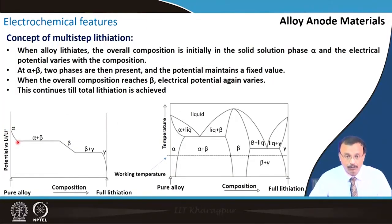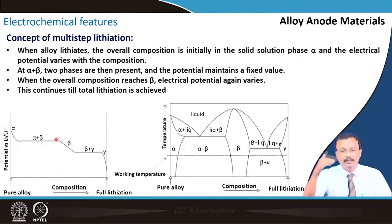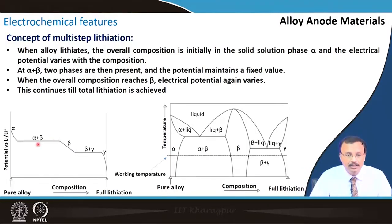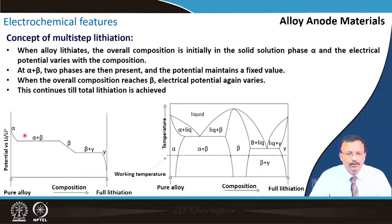When the alloy lithiates, the overall composition is initially in a solid-solution phase (alpha), and the electrical potential will vary with composition — the degree of freedom is equal to 1, so there is a reduction in potential as lithium concentration increases. When a two-phase mixture (alpha plus beta) is present, the potential maintains a fixed value because this has the lowest Gibbs free energy, and the chemical potential remains almost constant — leading to a voltage plateau. The beta phase is a single-phase region, beta plus gamma is a two-phase region, and gamma is again a single-phase region, following the same trend.